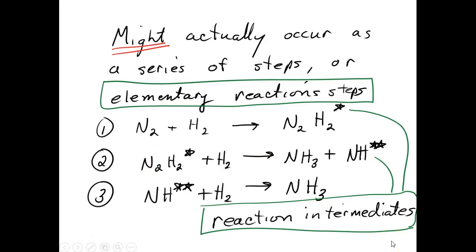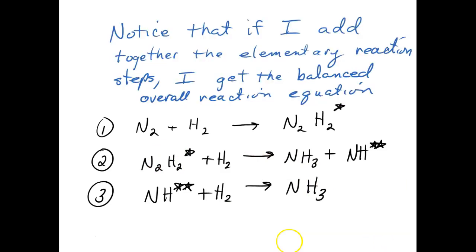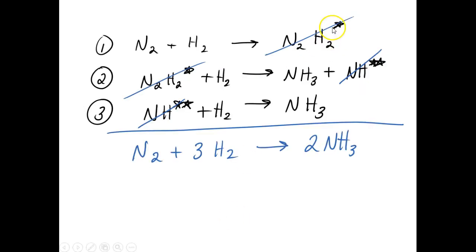They're sometimes called an activated complex. Notice that if I add up these steps — add up these reaction equations and cancel out things that are the same on both sides — I should get my overall reaction equation. This is a rule of any reaction mechanism: when you add up all the steps, you should get your overall reaction equation with the appropriate stoichiometric coefficients.